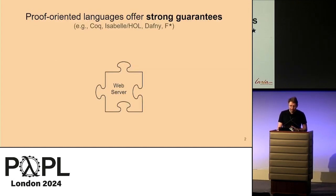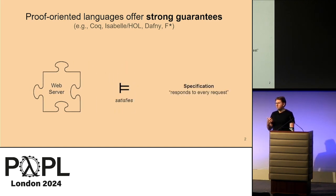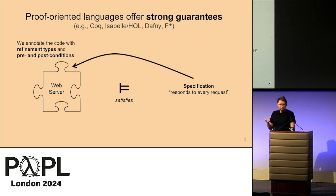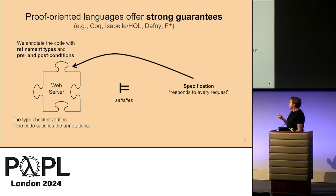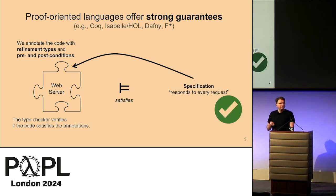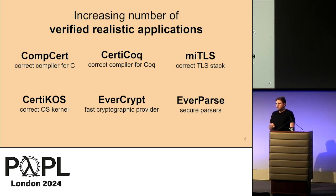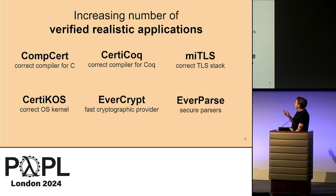It's a problem that exists in all proof-oriented languages. In a proof-oriented language, we can write a program, write a specification, and then verify that the program satisfies the specification. For example, we can verify that a web server responds to every request, by annotating the code using refinement types and pre- and post-conditions, and then the language has a tool that will verify if the annotations are satisfied, giving us a strong guarantee.